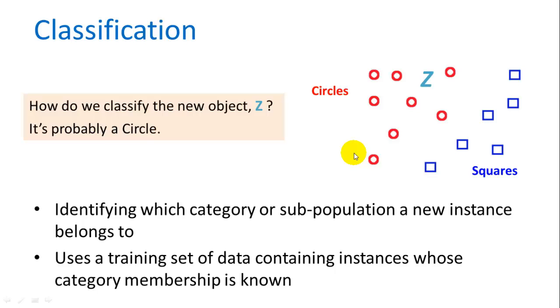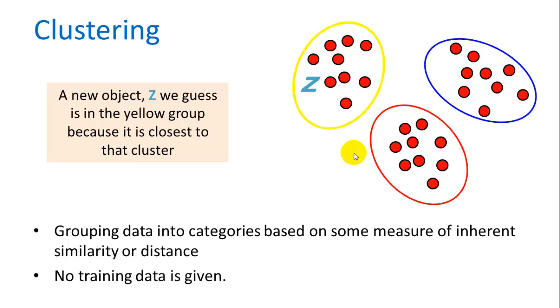In clustering, we don't have a training set. There is no training data. All we know is a bunch of different characteristics of each object. And based on those characteristics, we can plot those objects, and we can group or cluster them together with other similar objects by using their attributes.